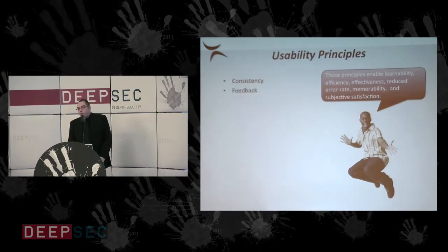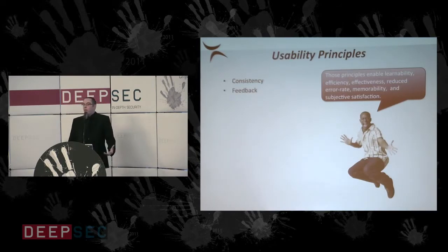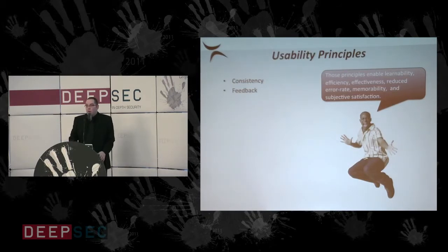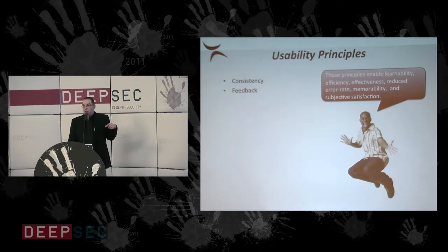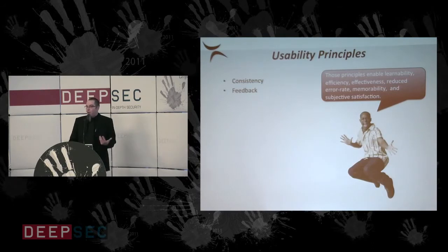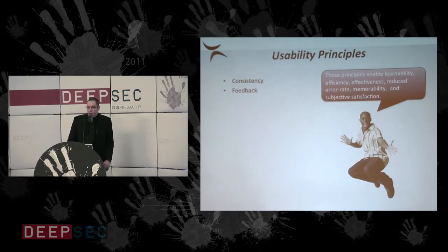The next principle is feedback. If I ask you a question and the system does not react, it makes me crazy because I don't get feedback — I don't know whether my action did something to the system or not. A very classical example from early web times: people could click a search button, get no feedback, think nothing is happening in the background, click again, and put themselves in a never-ending loop.